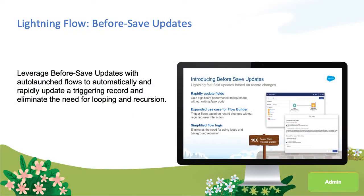One of the features we are most excited about in the Spring 20 release is Lightning Flow before-save updates. We've introduced a new trigger inside of Flow which allows you to make updates to fields on a record prior to, or before, that record is saved to a database.